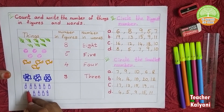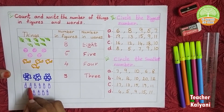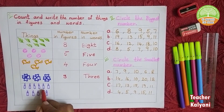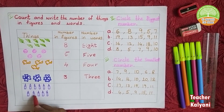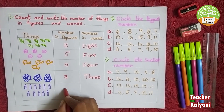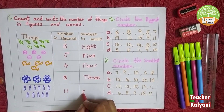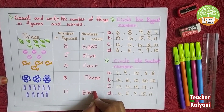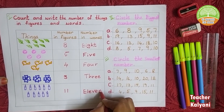Next one, we count candles: 1, 2, 3, 4, 5, 6, 7, 8, 9, 10, 11. 11. Number in word: E, L, E, V, E, N. 11.